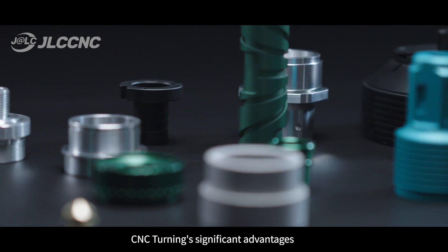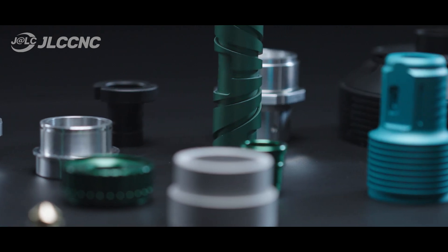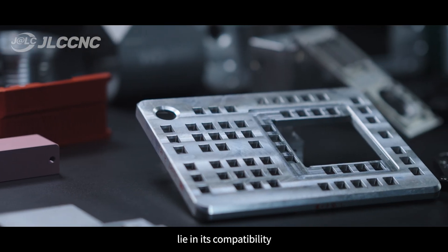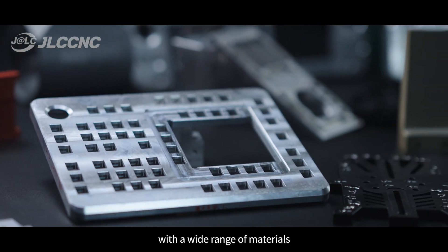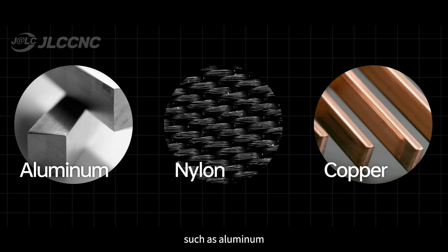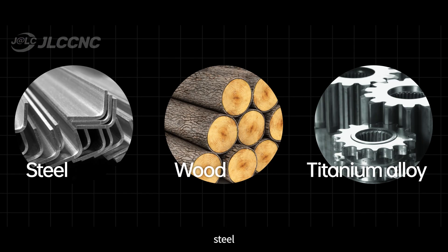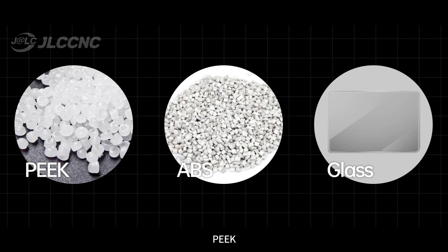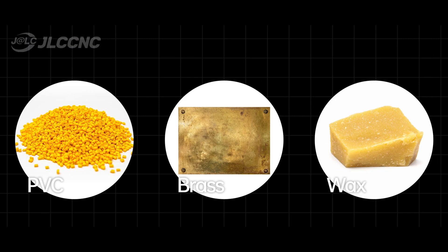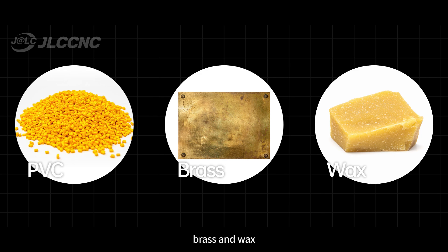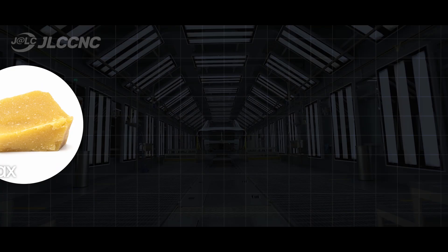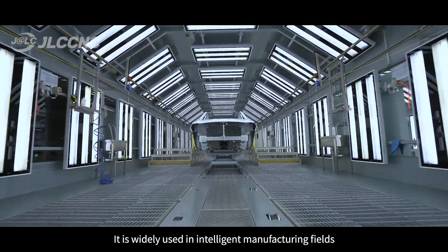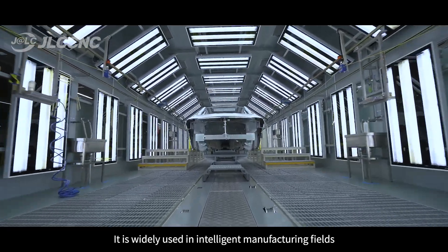CNC turning's significant advantages lie in its compatibility with a wide range of materials, such as aluminum, nylon, copper, steel, wood, titanium alloy, PEEK, ABS, glass, PVC, brass, and wax.